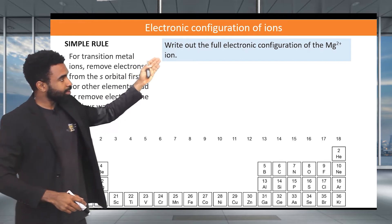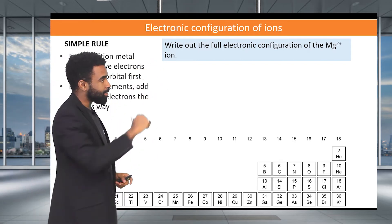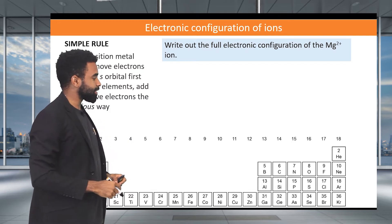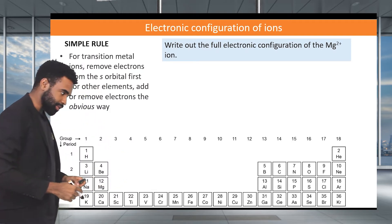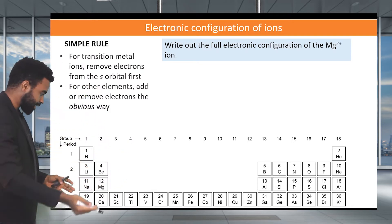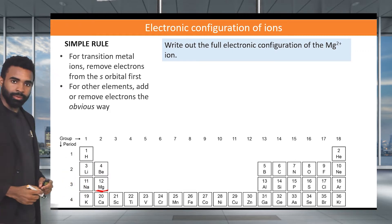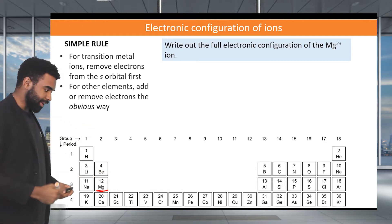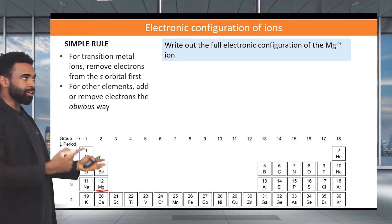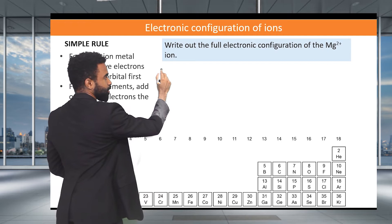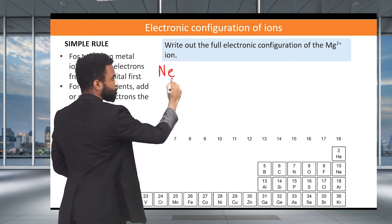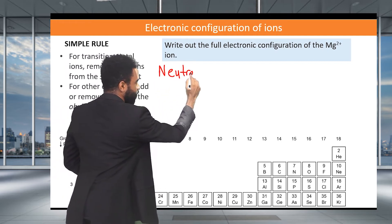It says we need to write out the full electronic configuration of the Mg2+, magnesium 2+, ion. How do we go about doing this? Well first, we find magnesium in the periodic table. We see it here and it has an atomic number of 12, which means we need also 12 electrons. So we're going to start out by writing the configuration of the neutral Mg.